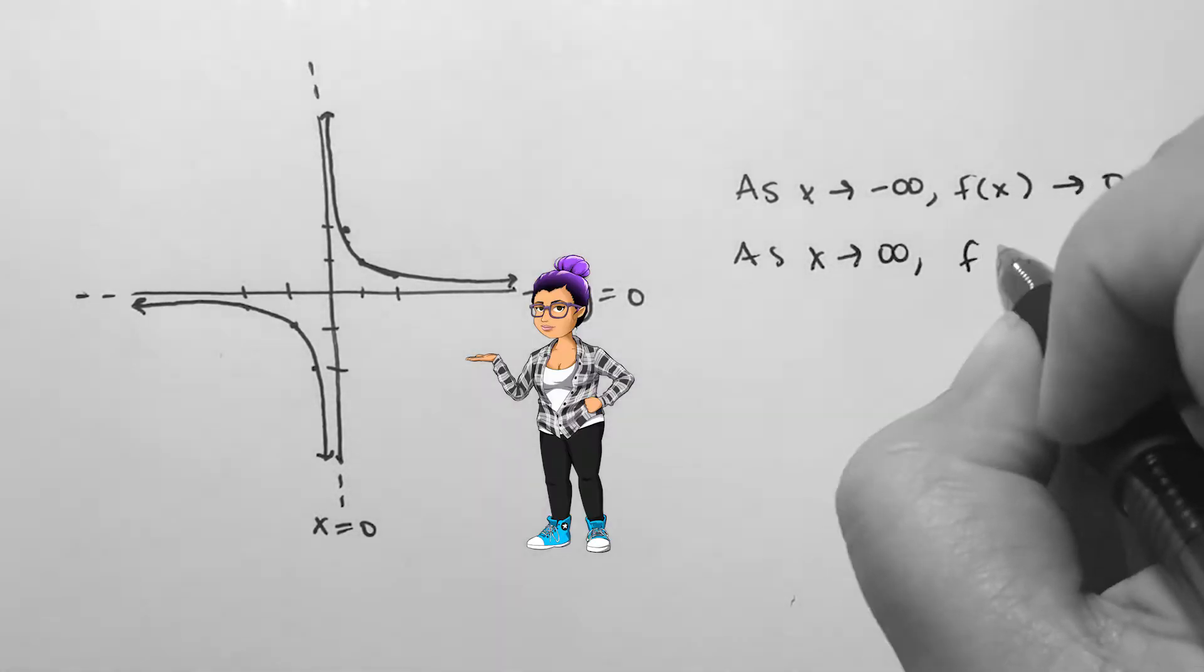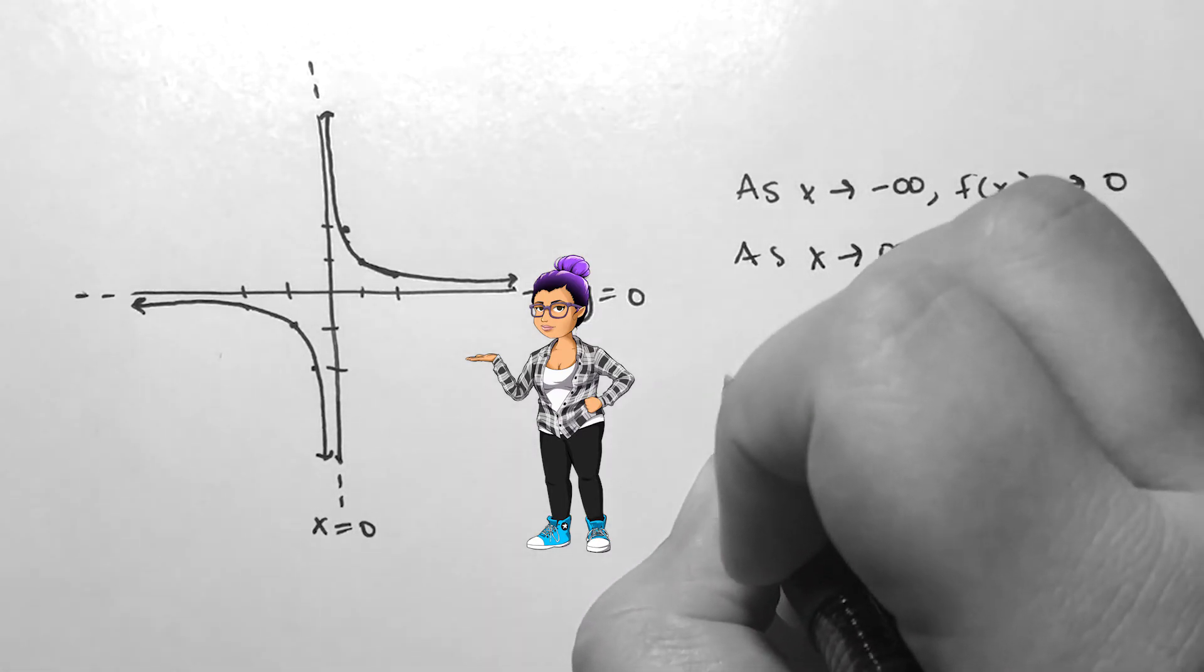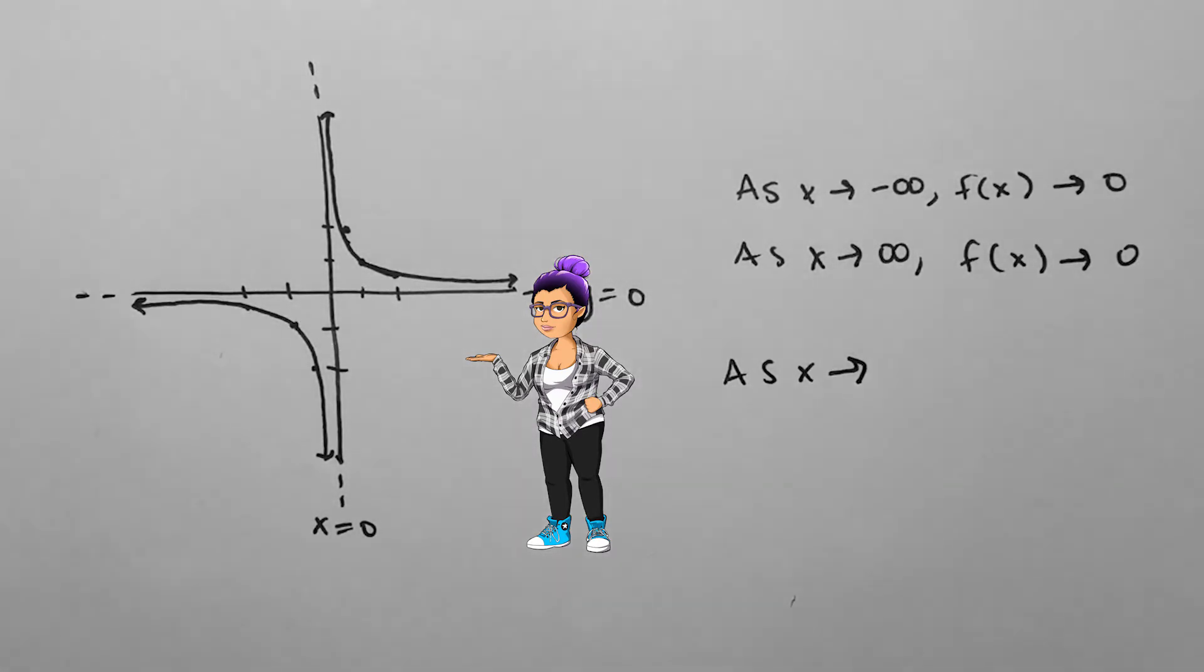As x approaches positive infinity, f approaches 0 but from the other side. This doesn't change our arrow notation, though.